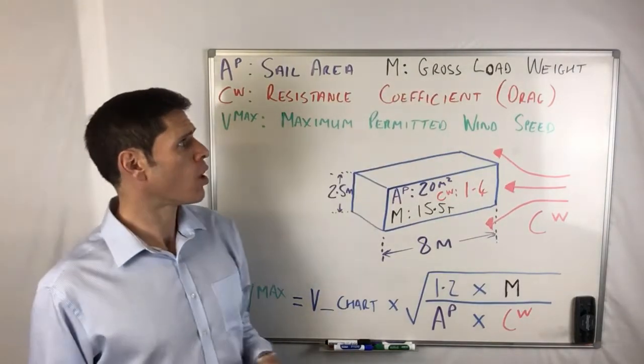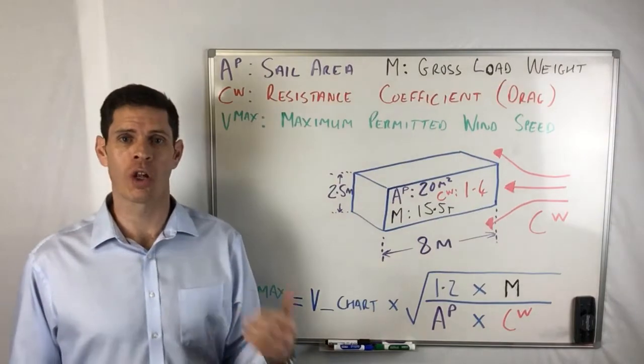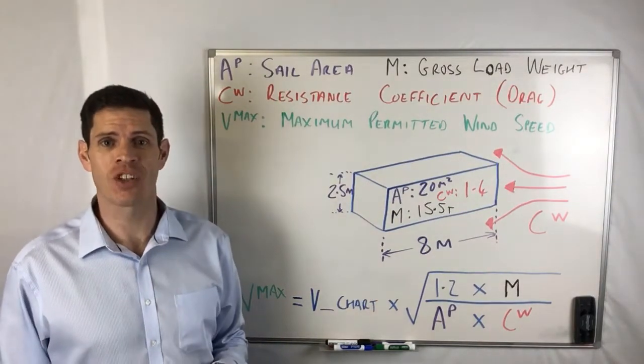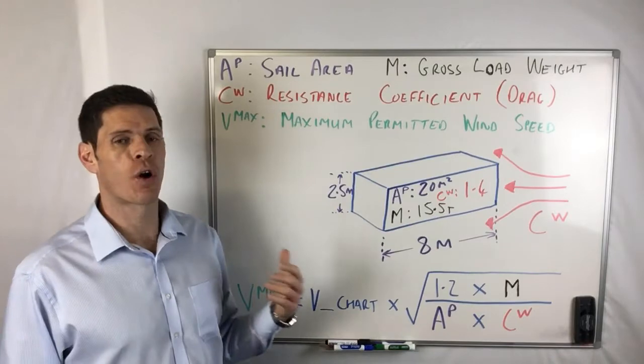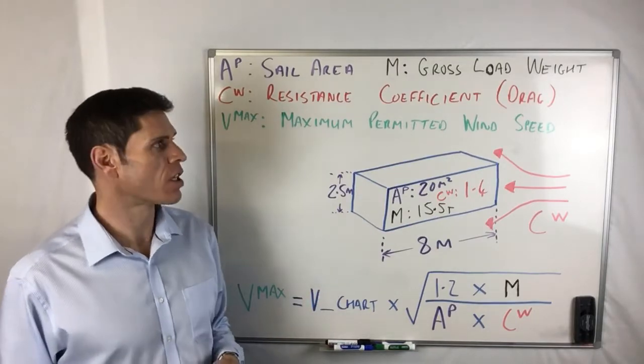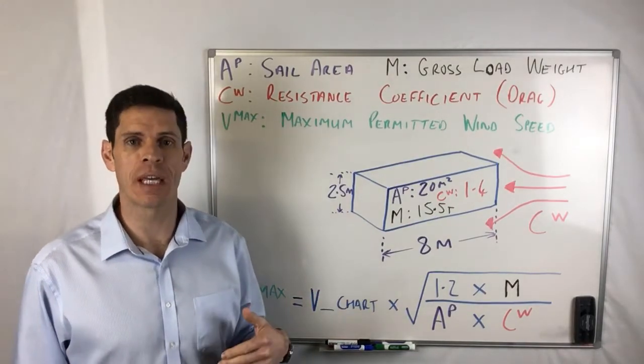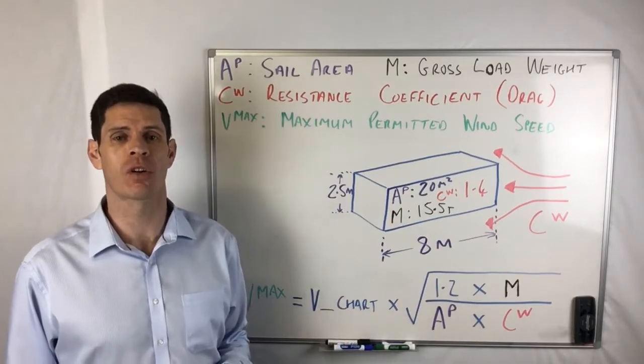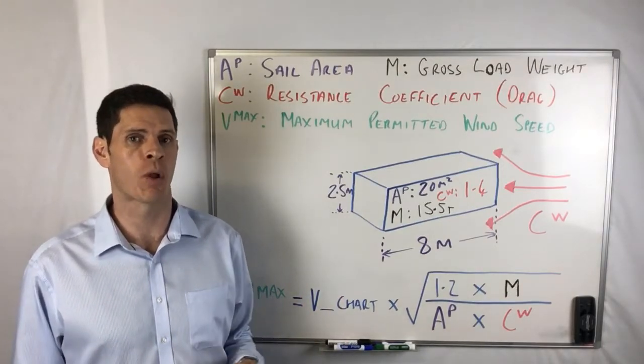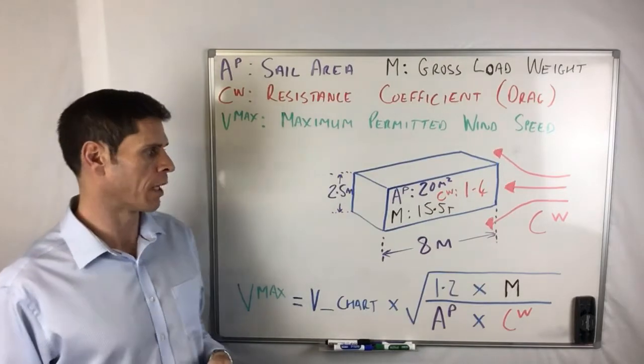The other element is M which is our gross load weight, load mass essentially. Bearing in mind for mobile and crawler cranes, not only will you allow the lifting accessories as part of your load weight, you'll also allow the hook block. So M represents the complete load weight.